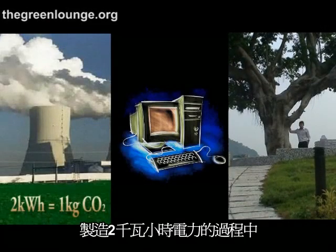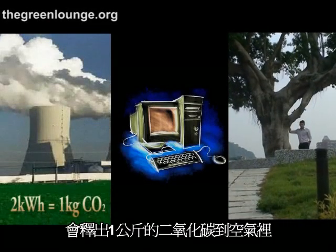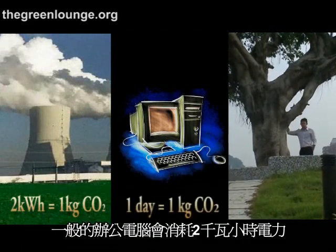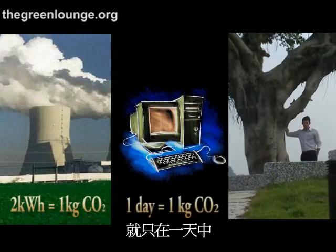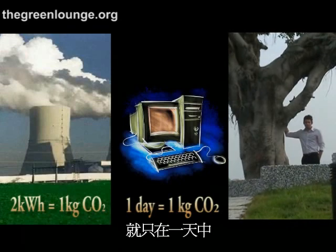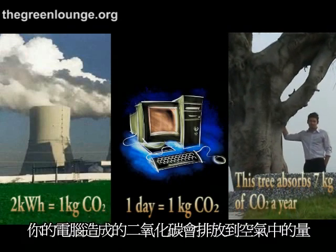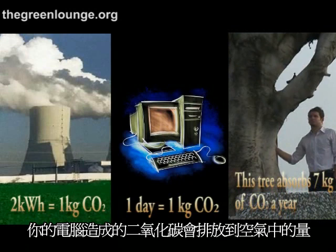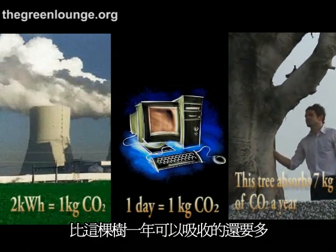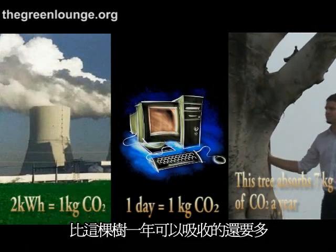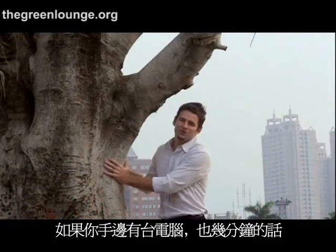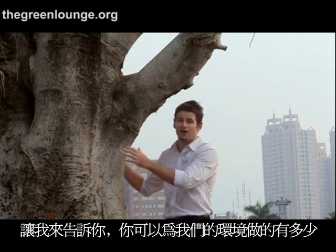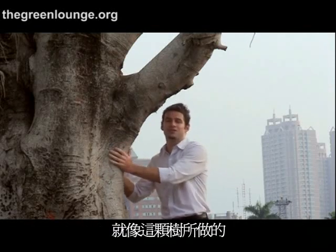The production of two kilowatt hours of electricity emits one kilo of CO2 into the air. The average office PC will go through that two kilowatt hours in a single workday. That means in just seven days your computer will cause more CO2 to be released into the atmosphere than this tree can absorb in a year. If you've got a computer and a couple of spare minutes, I'll show you how you can do as much good for the environment as this tree is doing.